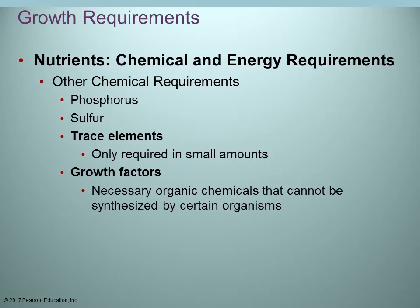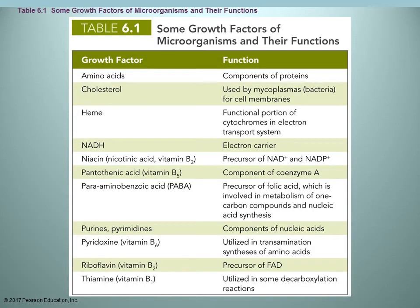Other chemical requirements to be aware of, especially in the lab, include phosphorus, sulfur, sometimes trace elements, and whether certain growth factors are necessary. A table lists some common growth factors microorganisms may need, such as amino acids to make proteins, or vitamin B2 to help make FAD, which is used as an electron transport carrier.